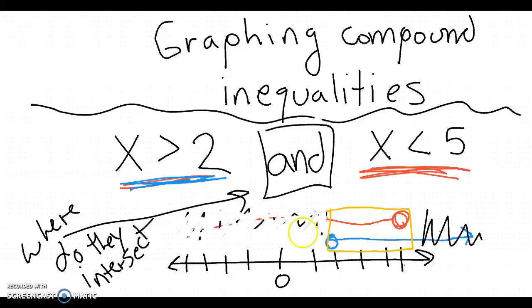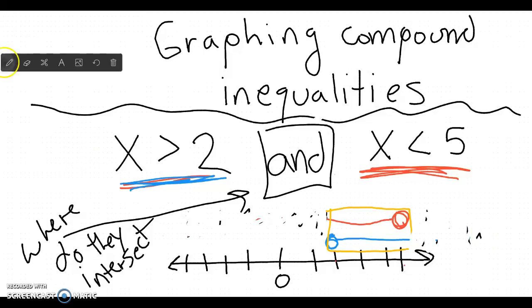Because for an and statement, you only get the parts where they intersect. So for these problems, what you want to do is you want to graph these two things separately, this thing and that thing separately. And then for and, you see where they intersect. Or you just leave it like normal.